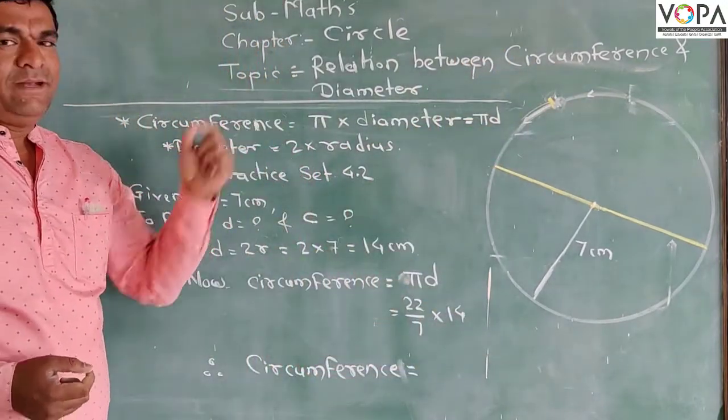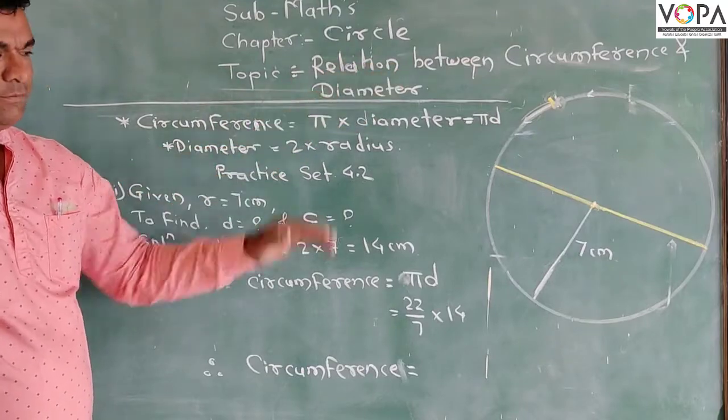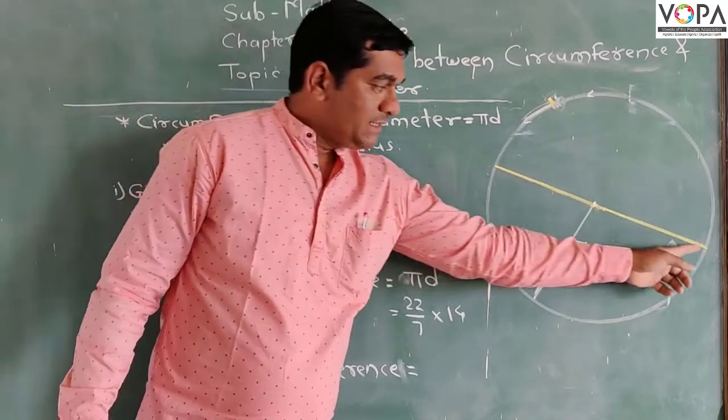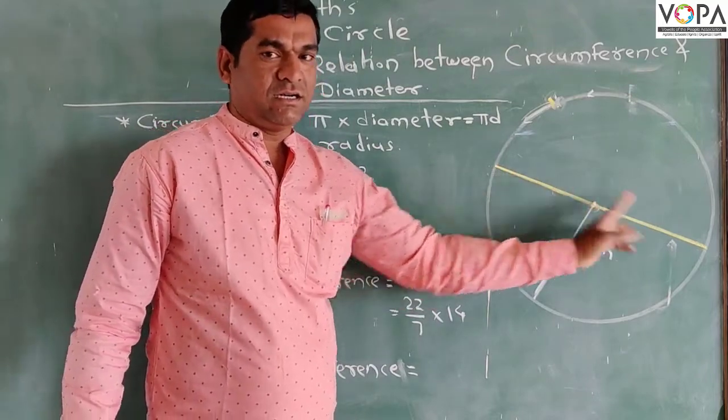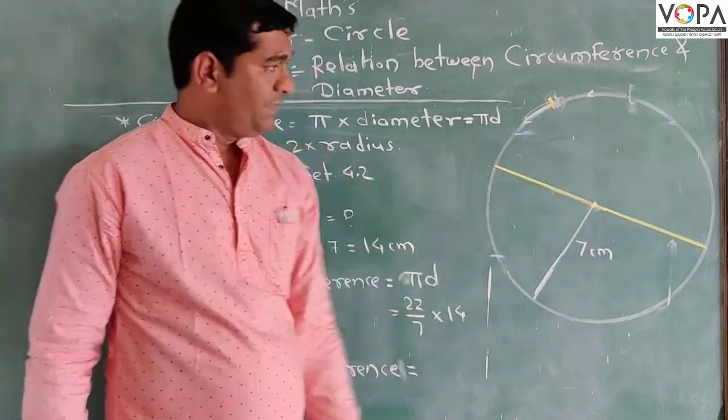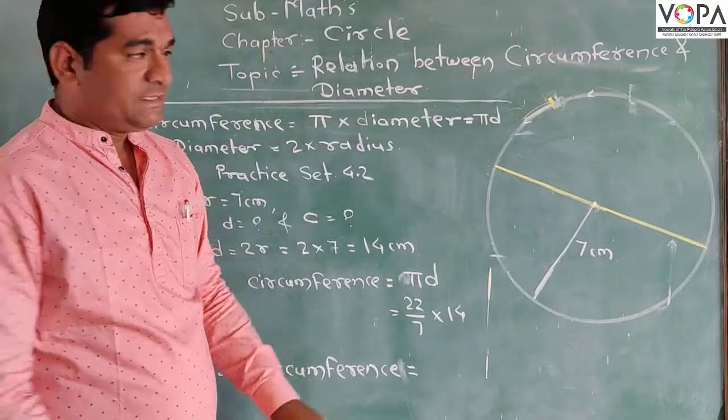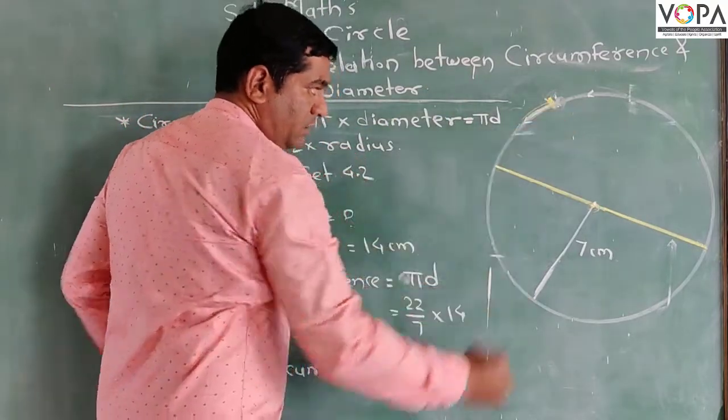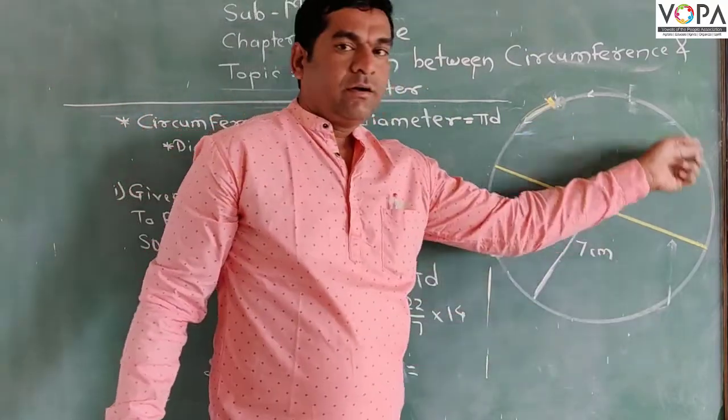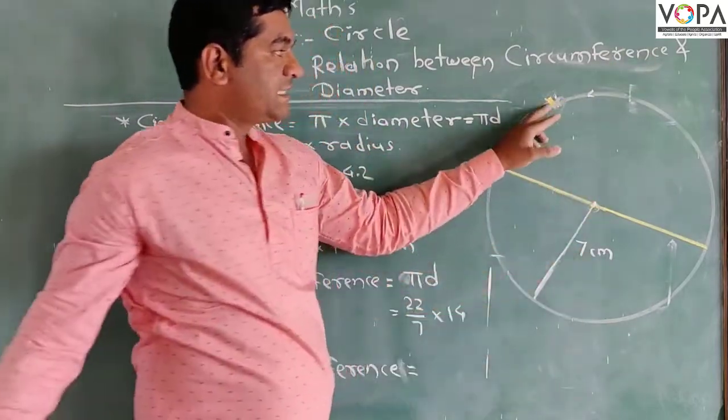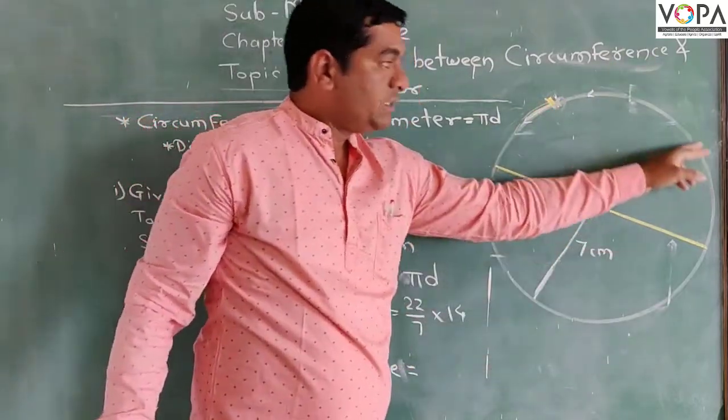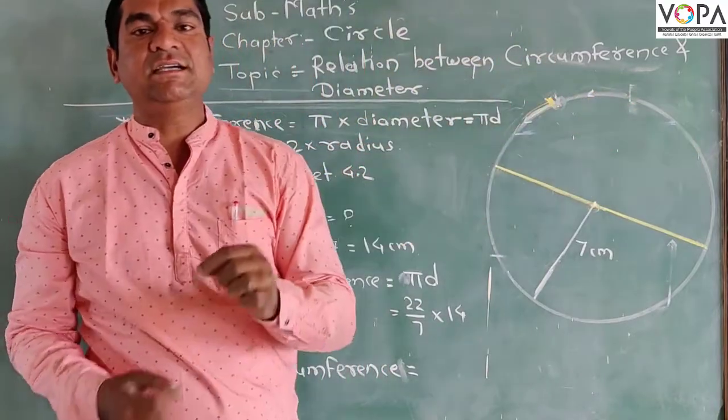The diameter is the biggest chord of a circle which passes through the center of the circle. And what is circumference? If we move clockwise or anticlockwise around the circle and come back to the starting point, the total distance we cover is called the circumference.